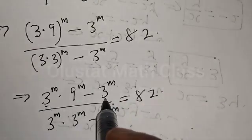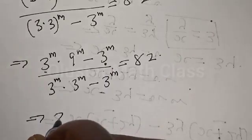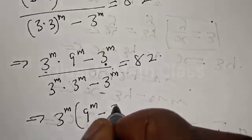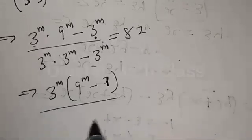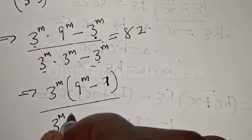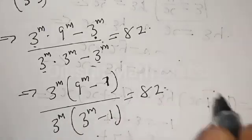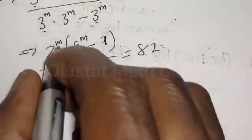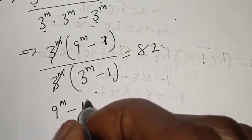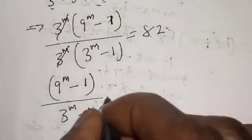Then 3 raised to power m is common in the numerator and 3 raised to power m is common in the denominator. We factor out 3 raised to power m from the numerator to get 9 raised to power m minus 1, and factor out 3 raised to power m from the denominator to get 3 raised to power m minus 1. After cancelling, we have 9 raised to power m minus 1, over 3 raised to power m minus 1, equal to 82.